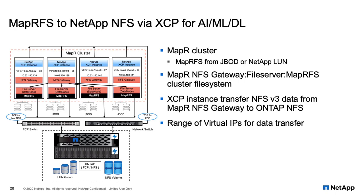MapR NFS gateway data is accessed through the MapR file server service. A NetApp XCP software instance enables data transfer from the MapR cluster NFS gateway to NetApp ONTAP NFS. A range of virtual IPs is used for data transfer, and NetApp ONTAP A800 with NFS volumes serves as the destination for the deployment of XCP.